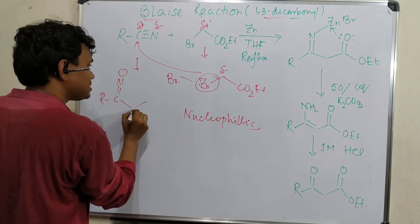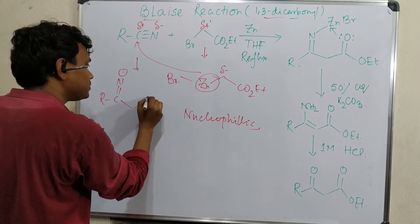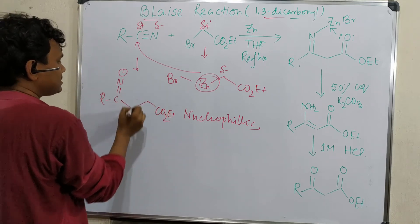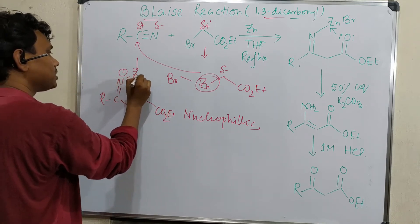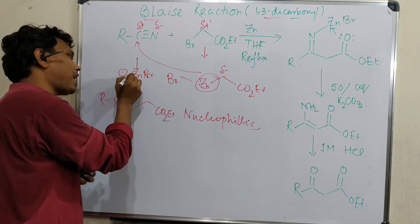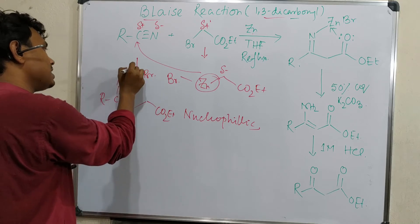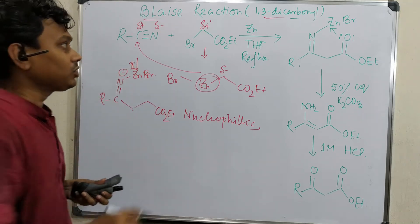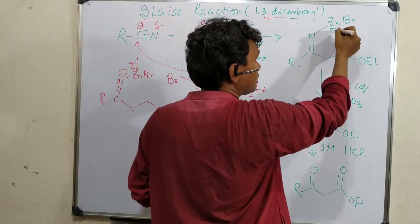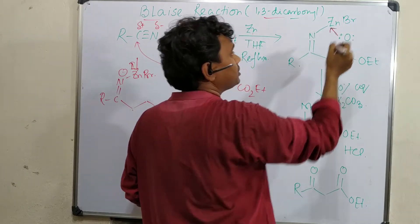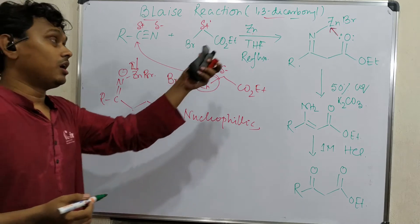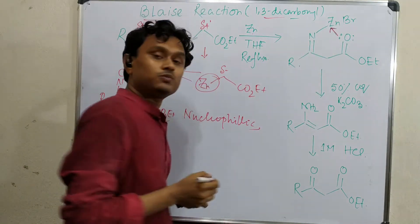And here this is the CH2, and this is CO2Et. Zinc will now shift from here to here. It is true that to counterbalance the negative charge of this nitrogen, zinc will go there. Also, this carboxyl oxygen will reorient its position and coordinate with the zinc. In this way this carboxyl oxygen also gets some stabilization from the presence of the zinc.